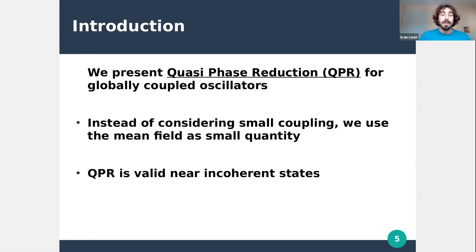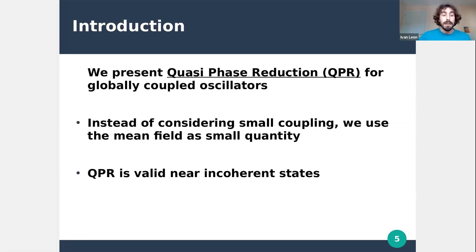Instead of assuming the coupling is small, we suppose that the mean field is the small quantity. Then quasi-phase reduction becomes valid near incoherent states.